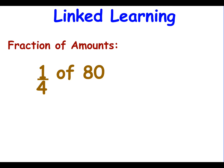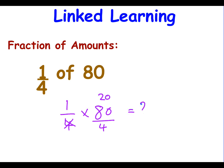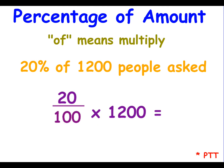In an earlier lesson we learned how to do fractions of amounts. So a quarter of 80 meant a quarter times 80, and we showed you a technique to make this calculation easier. Percentage of amounts are very similar — a percentage of 20% means 20 over a hundred, so essentially we're talking about fractions of amounts.